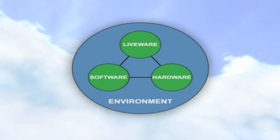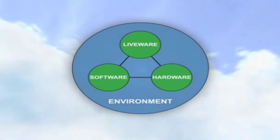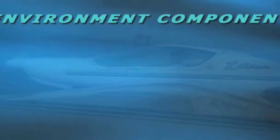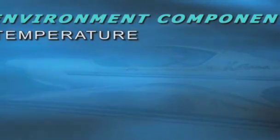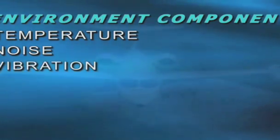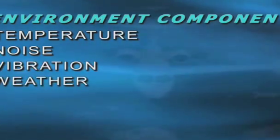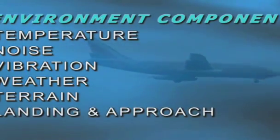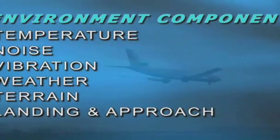The third component in the Shell Model is E, representing the environment. The environment embodies both internal cabin and external aircraft areas. Elements such as temperature, noise, vibration, weather, terrain, and landing and approach all play a part of the environment component.